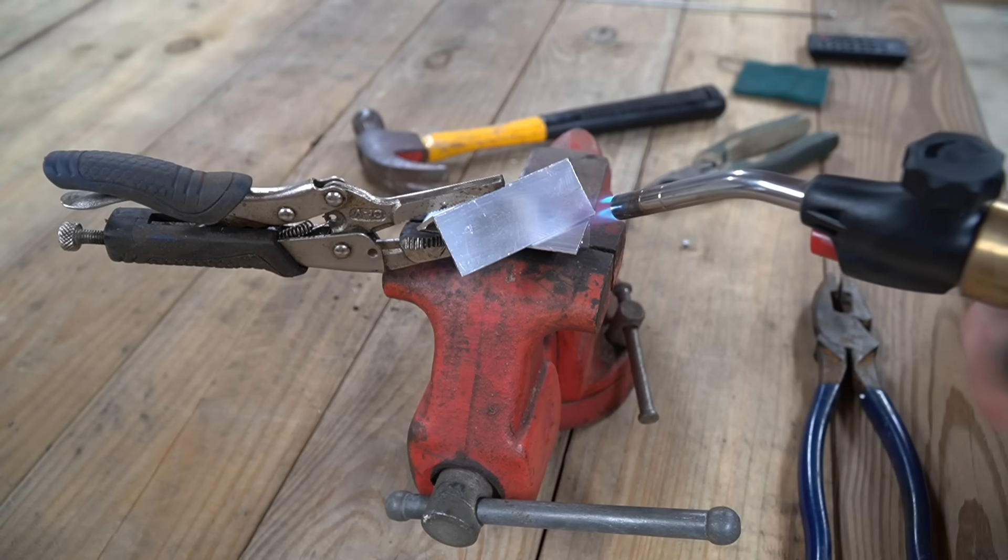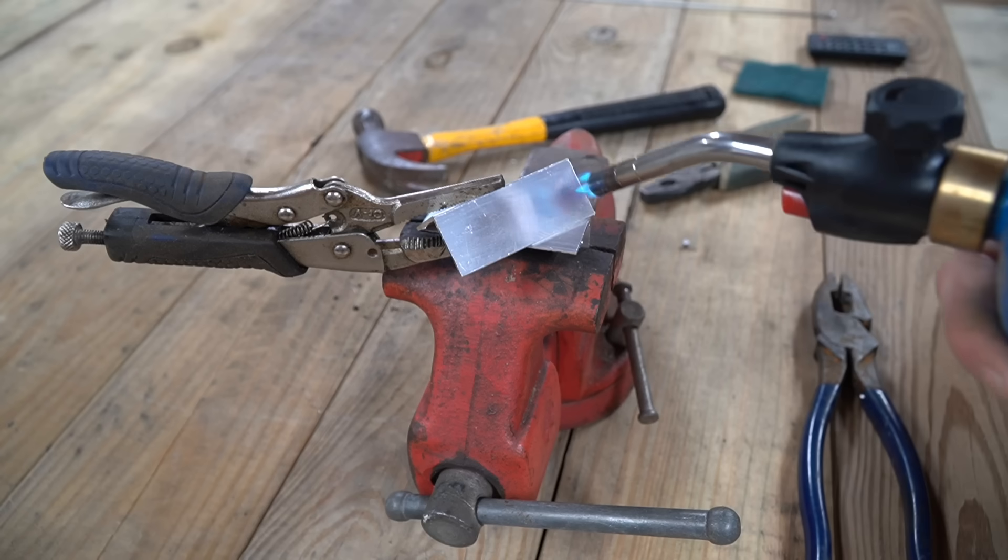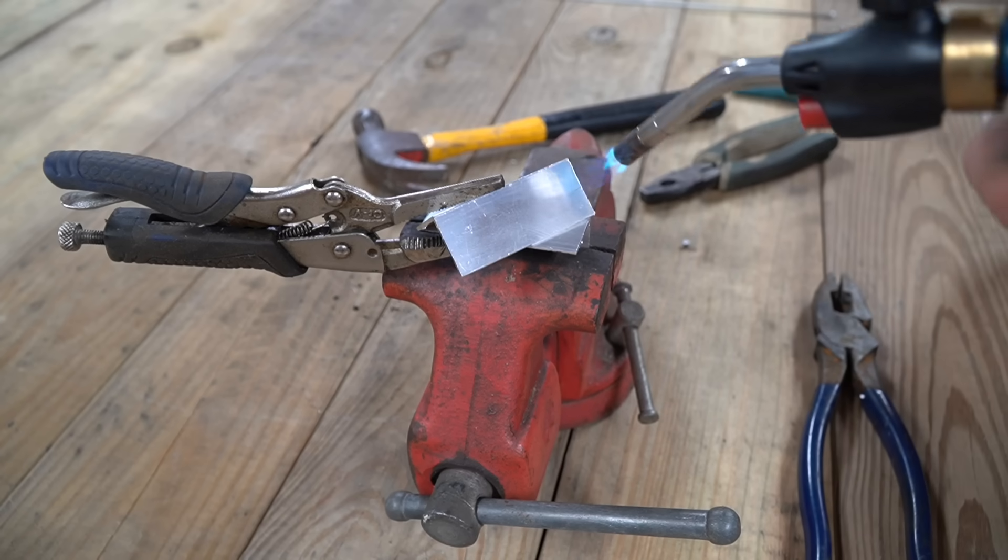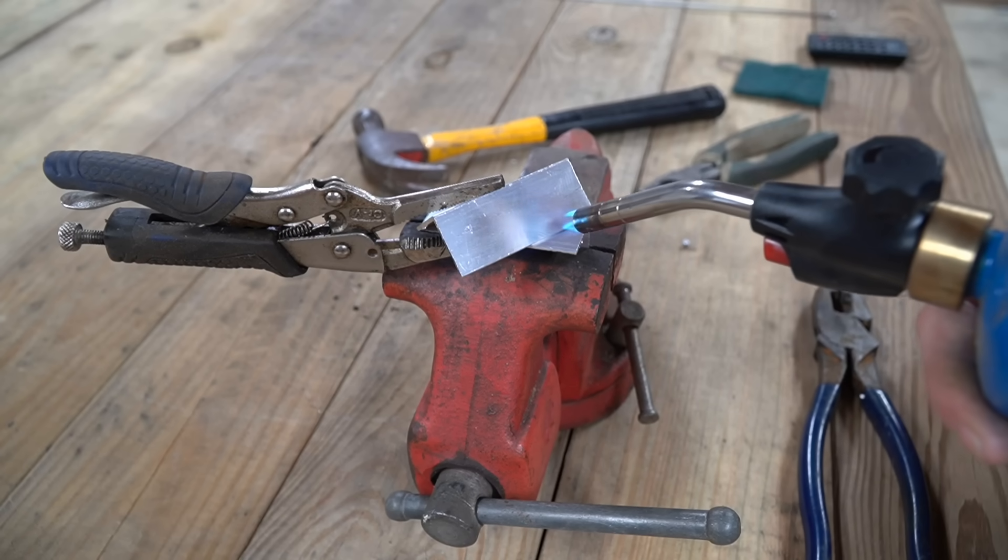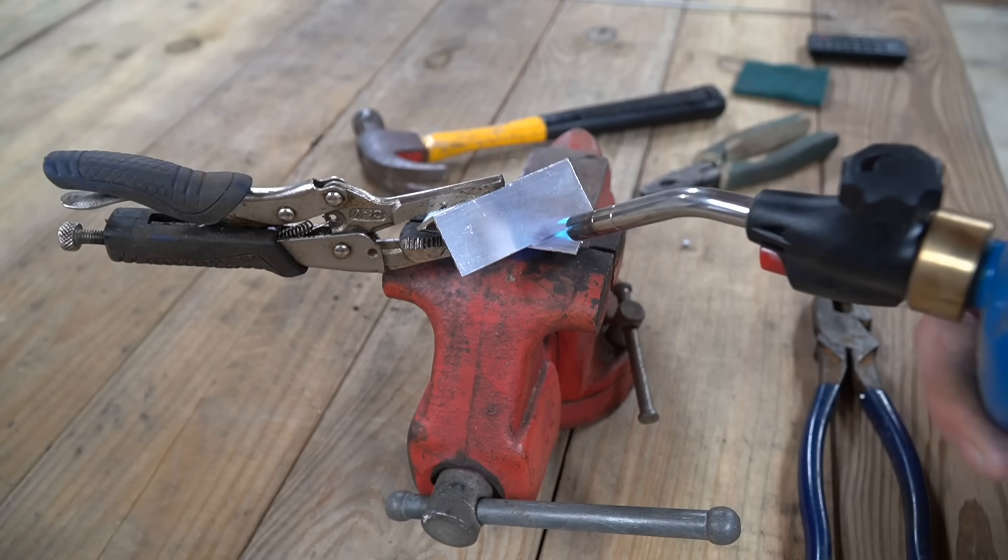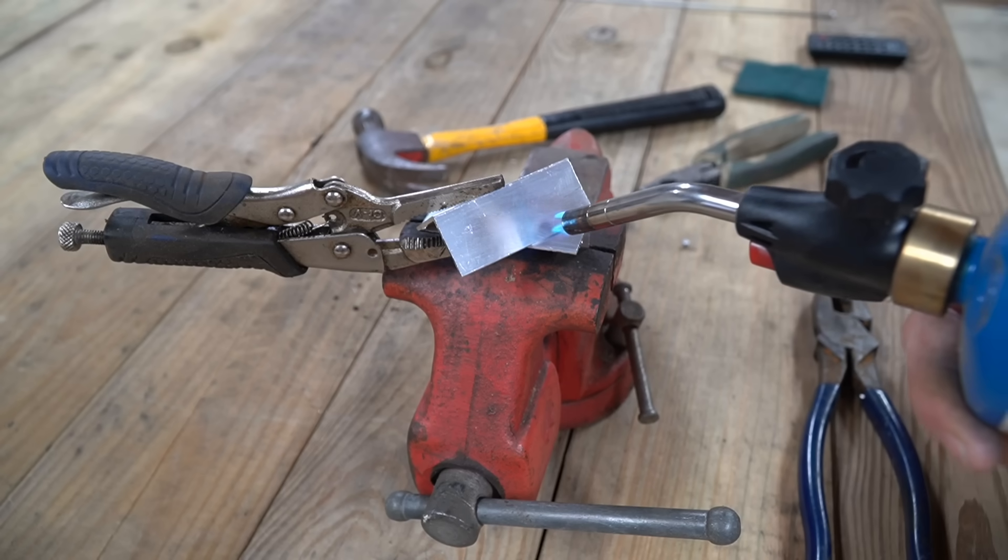So you're going to want to take your flame and apply it directly to the part you're going to want to weld. Something like this, you can kind of help heat up the rest of it a little bit because it is going to kind of heat sink all of your heat away. It is aluminum. But once you get it up to the working temperature, you're going to find out it's not difficult to mend these together with those rods.